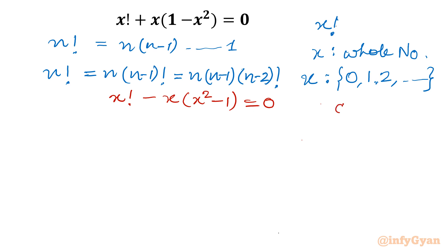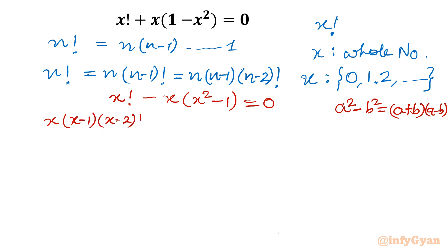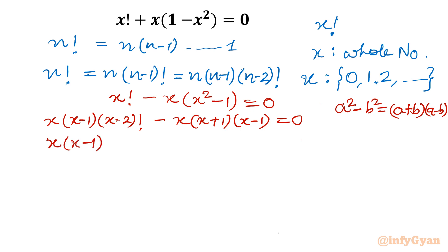Now the difference of squares formula comes into the picture, which can be written as (a plus b)(a minus b). So using the recursive formula, I can write x factorial as x times (x minus 1) times (x minus 2) factorial, minus x times (x plus 1)(x minus 1) equal to 0. Now x and (x minus 1) are clearly common, so I will take x(x minus 1) outside, leaving in the bracket: (x minus 2) factorial minus (x plus 1).